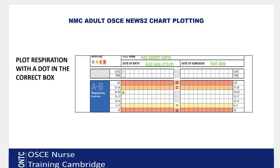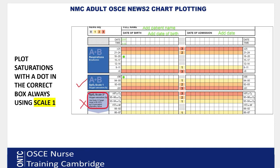Respirations are plotted with a dot in the correct box. For example, if the patient's respirations are 19, you plot a dot in the 18–20 box. Use a dot — not the number — placed neatly in the correct box.